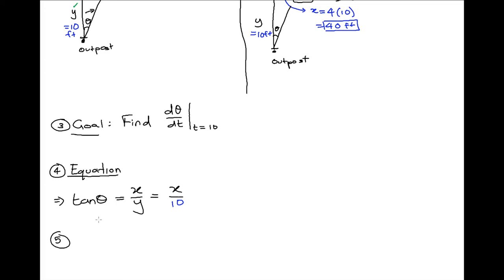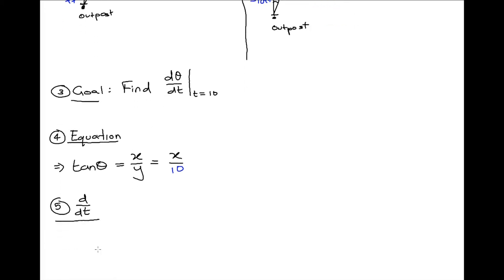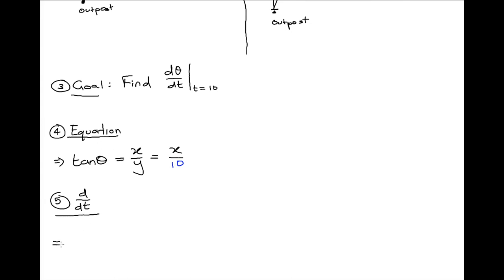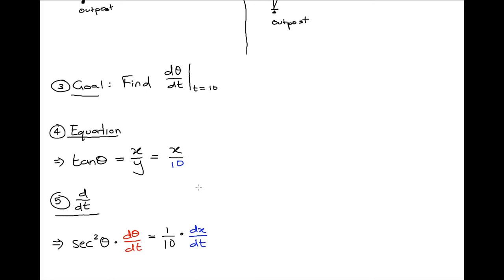Now I'll take the derivative with respect to time — this is where we make things move. We're going to use implicit differentiation. On the left-hand side, the derivative of tangent theta gives secant squared theta, and then we get our dθ/dt. On the right-hand side, we have 1/10 times dx/dt.